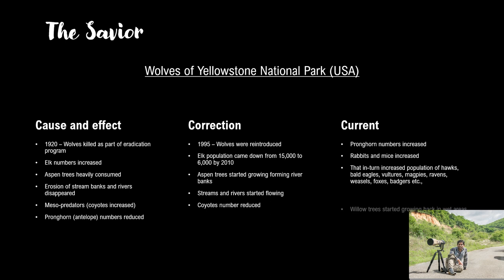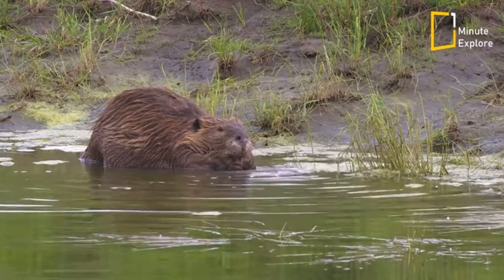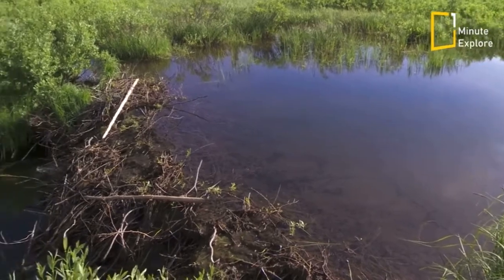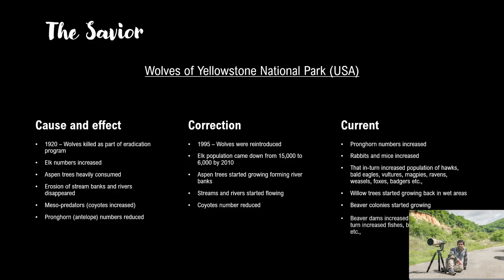Along with aspen trees, other trees such as willow trees started growing around water bodies. Beavers — nature's wonderful builders — started building water dams. Fish population, waterfowl population and underground water levels increased. The increase in the number of insects, beetles and others is a direct result of the presence of wolves in that ecosystem. Today, one can observe over 57 species of beetles alone in Yellowstone National Park. Similar is the importance of an apex predator such as a leopard in the ecosystem.